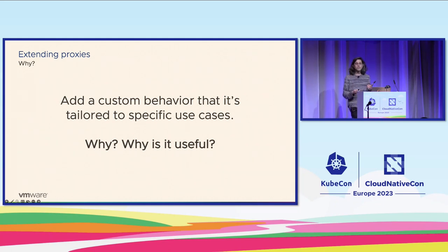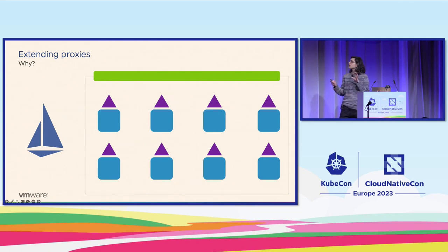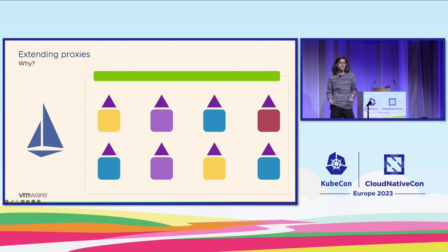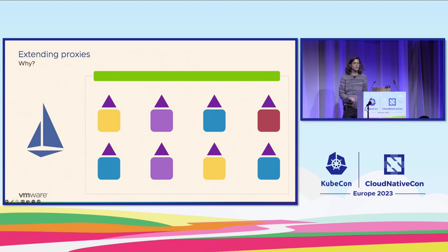But why is it useful to do this kind of extension at the proxy level and not, for example, inside the services? If we look at the same picture we had before, we have eight services in this example, but every service is different — it could be a Ruby application, a Node.js application, a Go service, or JavaScript. There are many different services all together in the same infrastructure, talking and providing content to users or to other services.